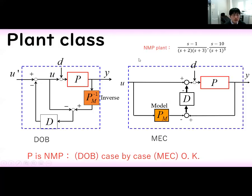Next, we show the case of non-minimum phase plants. A non-minimum phase plant is given as follows. In this case, the inverse system is unstable, so it is difficult to make a Disturbance Observer for a non-minimum phase system. On the other hand, MEC uses the model itself, so it is okay to use MEC for non-minimum phase systems. In the case of MEC, a parallel feed-forward compensator is used to design it easily.